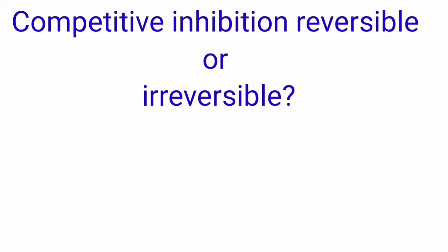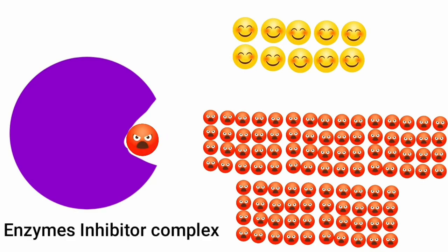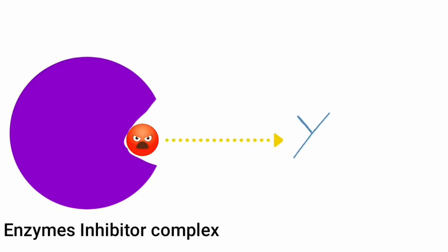Is competitive inhibition reversible or irreversible? The answer is competitive inhibition is reversible. To understand this, consider two situations. In situation one, there is one enzyme with 10 substrate molecules and 100 competitive inhibitor molecules. The concentration of competitive inhibitor is more than the substrate, so it dominates and binds with the enzyme, forming the enzyme-inhibitor complex. This complex cannot form products.